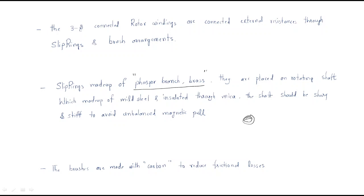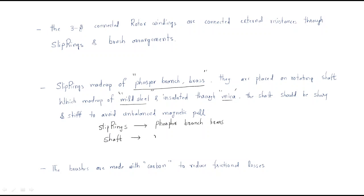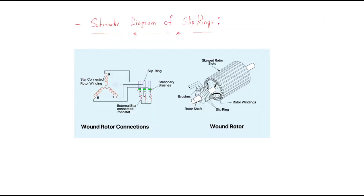The rings are placed on a rotating shaft. There is a shaft available, and the slip rings are placed on this rotating shaft which is made of mild steel, insulated through mica. The slip rings are made of phosphor bronze and brass material, and they are placed on a shaft made of mild steel. Steel is a very strong element — that is why we use it. This is the shaft made with steel, and these three are the slip rings.